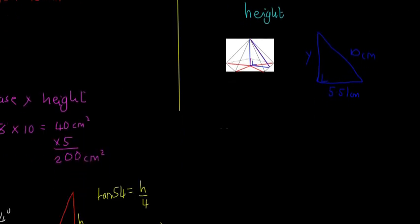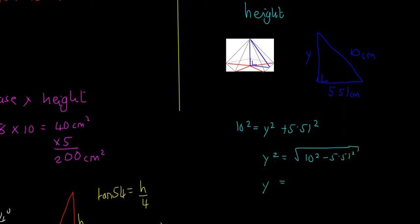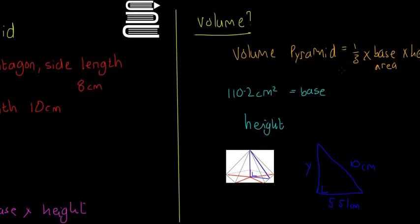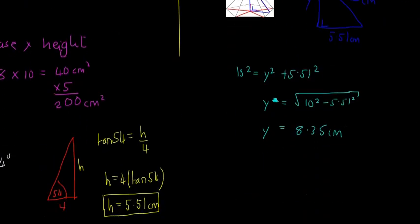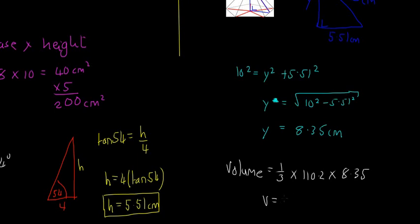Using Pythagoras: 10² = Y² + 5.51², so Y = √(10² − 5.51²) = 8.35 centimetres. That means the volume is ⅓ × 110.2 × 8.35, which gives a volume of 306.72 centimetres cubed. Remember, centimetres cubed is always the unit for volume.